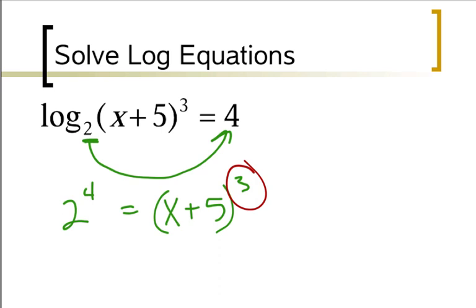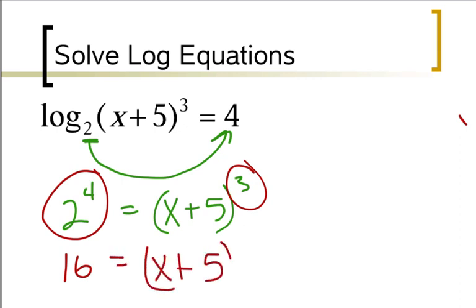There's two ways I can do it. The best way, the easiest way, is to go ahead and take 2 and raise it to the 4th power, so that'll give me 16, and that equals x plus 5 to the 3rd power.